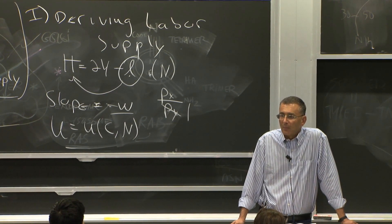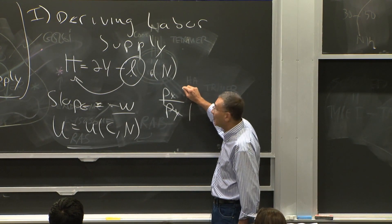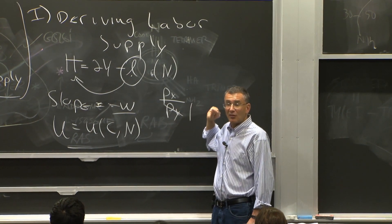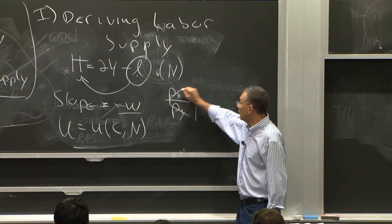Yeah? So on board, is PX leisure or the... PX leisure? This is the general formula. PX would be W. That's the price of leisure. So PX would be W. That's the price of leisure. The slope of the budget constraint is the ratio of those two prices. The price of leisure... So this is 1 and this is W.